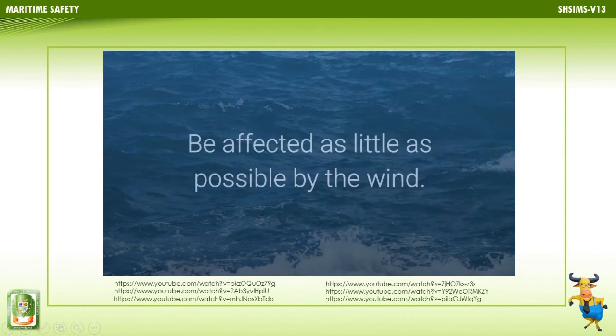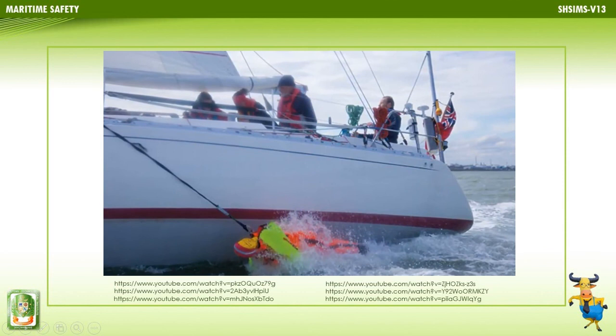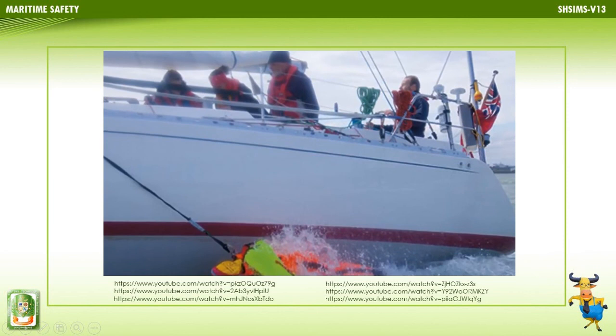The equipment thrown should be highly visible, have a light attached, be able to be deployed quickly, and be affected as little as possible by the wind. The crew member who shouted the alert now points continuously with an outstretched arm at the man overboard if still visible, ensuring visual contact is maintained and indicating the man overboard's location to the skipper. This crew member must do this and nothing else until relieved by the skipper.